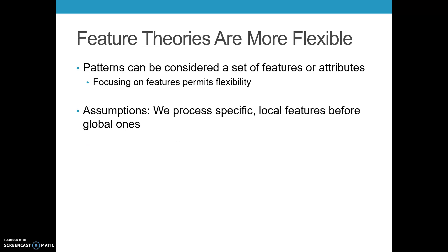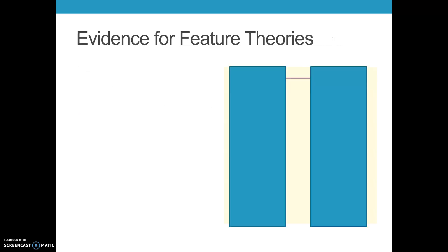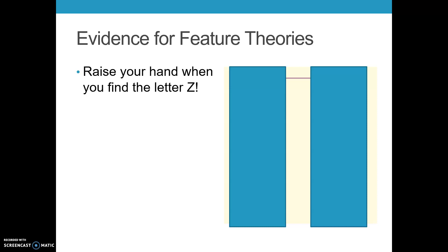So we tend to ascribe to what are known as feature theories. Patterns can be considered a set of features or attributes. Focusing on features rather than a very specific template actually permits flexibility. If I'm trying to judge whether or not something is an A, I don't have to focus on a particular template — I can focus on the three different lines involved and the relationships between them. One of the major assumptions of feature theories is to process specific local features before we process global ones.